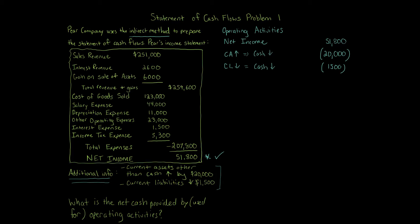We've taken care of net income — in the indirect method, you always pull out net income first. We've also done current assets and current liabilities. Moving through, we now need to parse through the rest of the information. The indirect method also requires depreciation expense. We find it right here: $11,000. Depreciation expense always gets added back — we increase by the amount of depreciation expense, so we add $11,000.